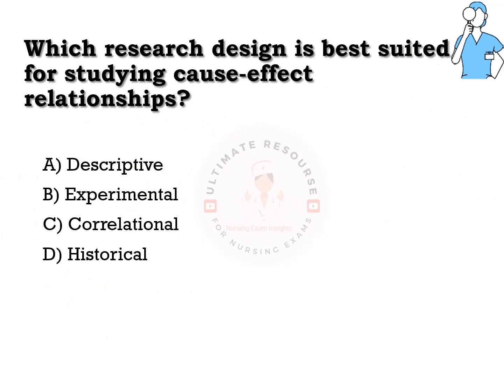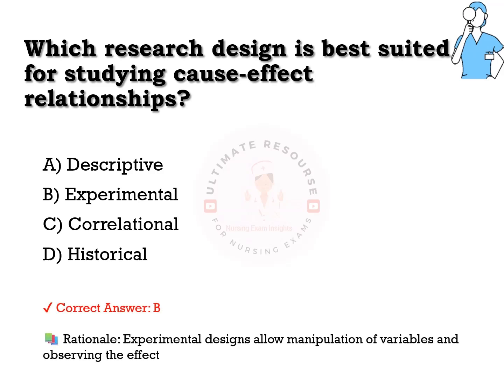Which research design is best suited for studying cause and effect relationships? Options are: a) descriptive, b) experimental, c) correlational, d) historical. The answer is b) experimental. Experimental designs allow manipulation of variables and observing the effect.